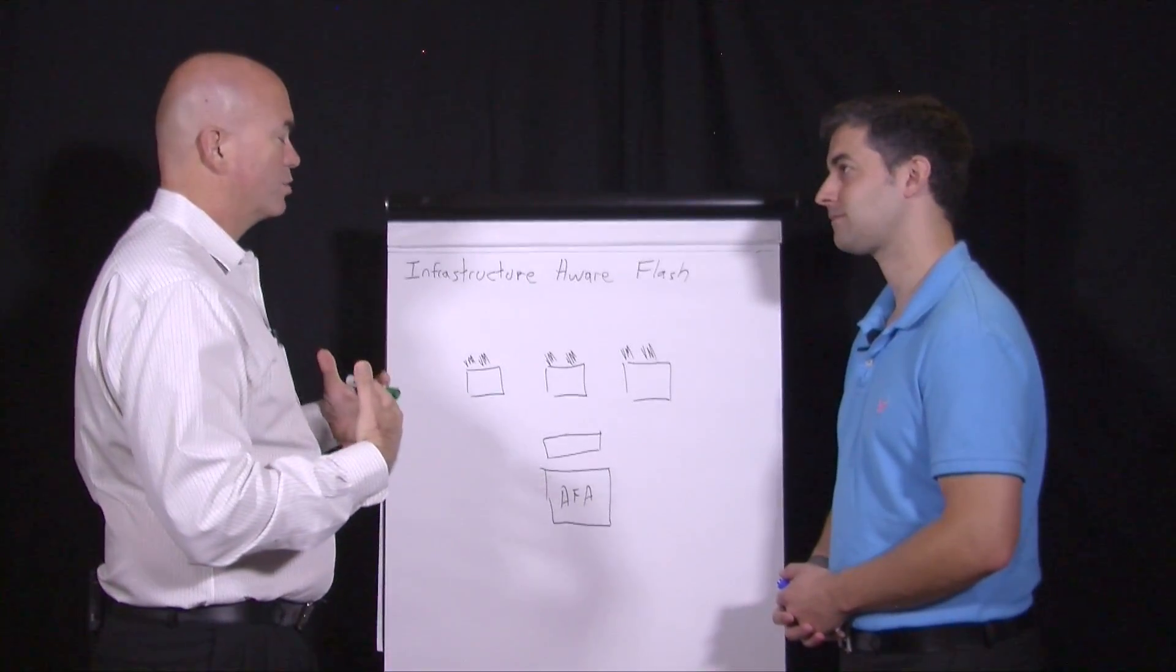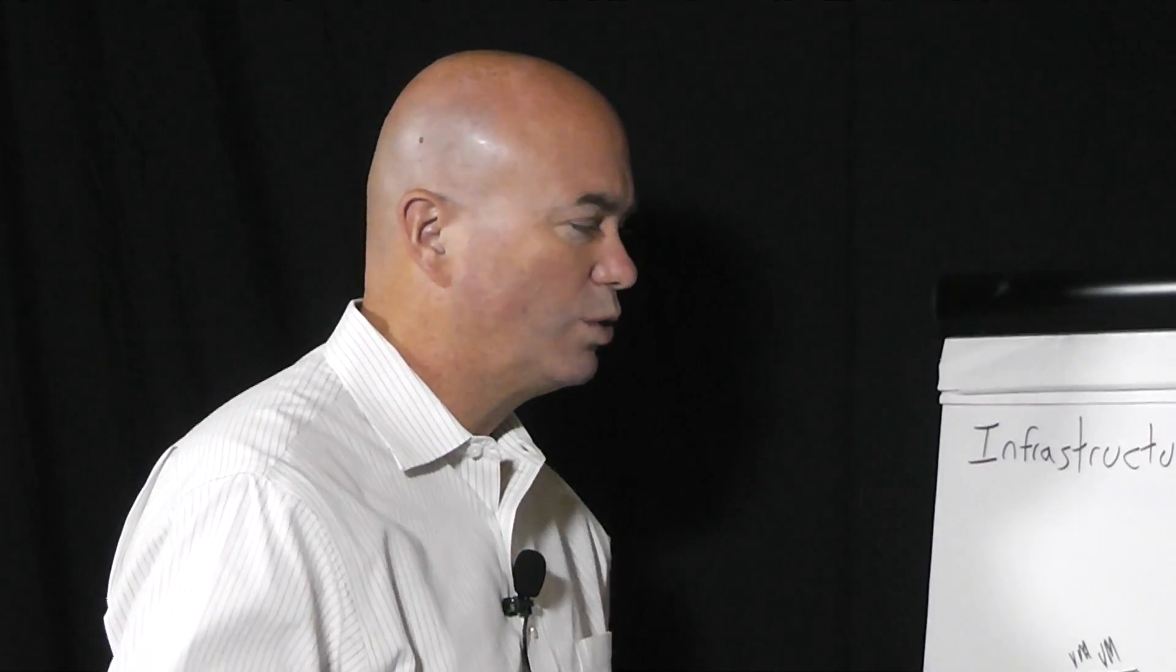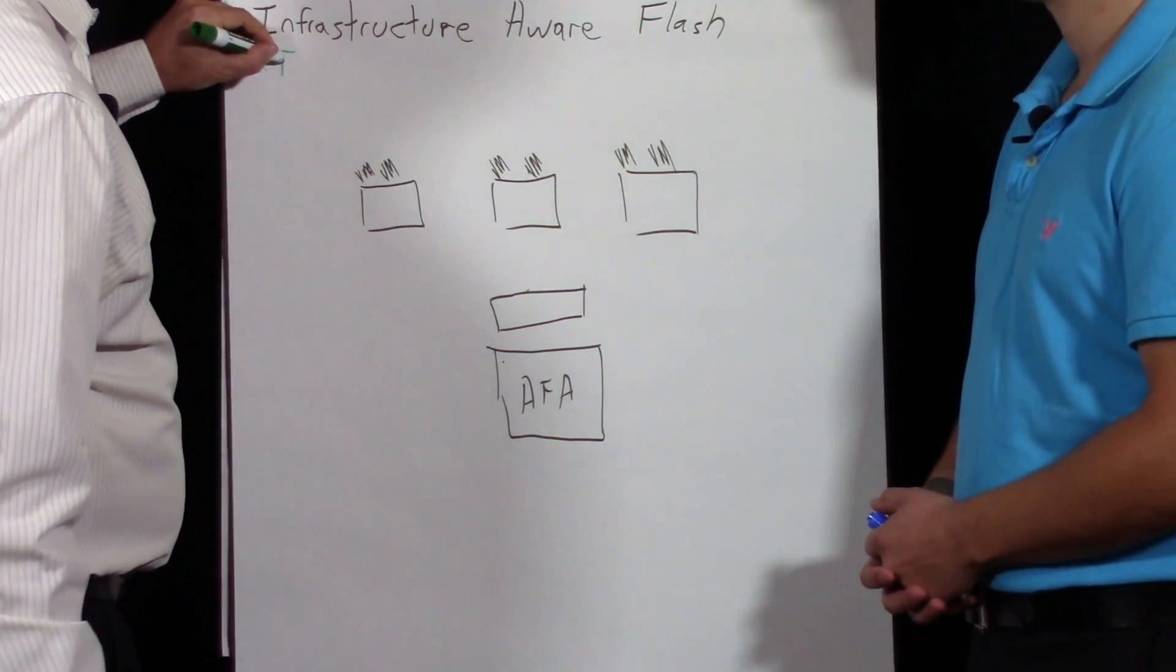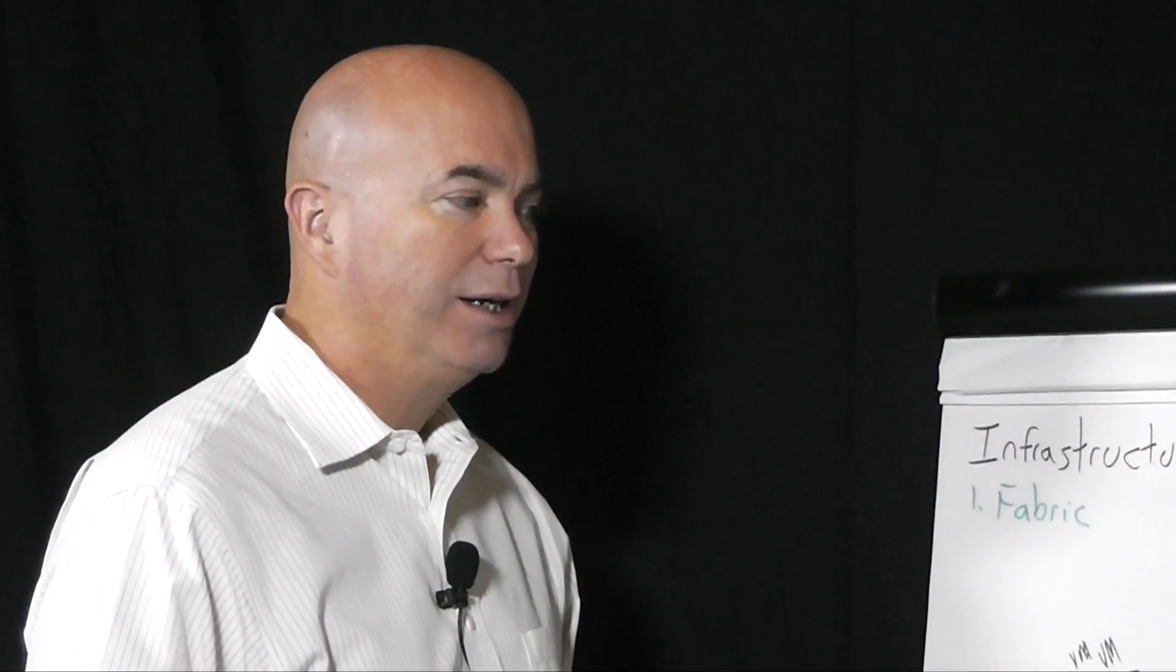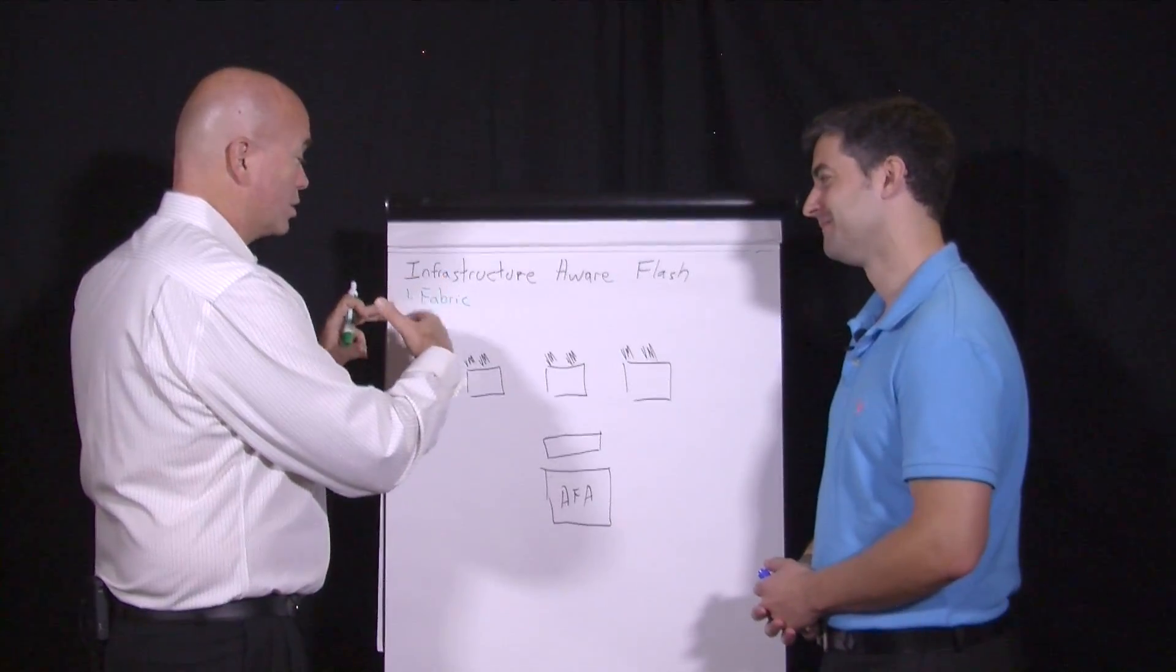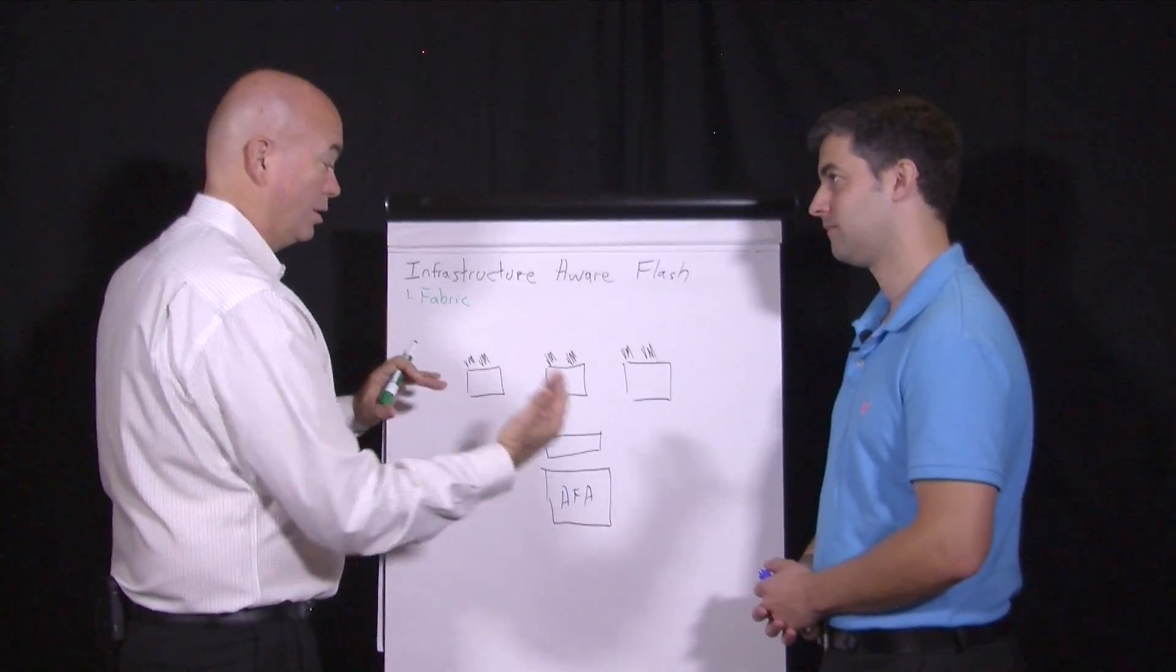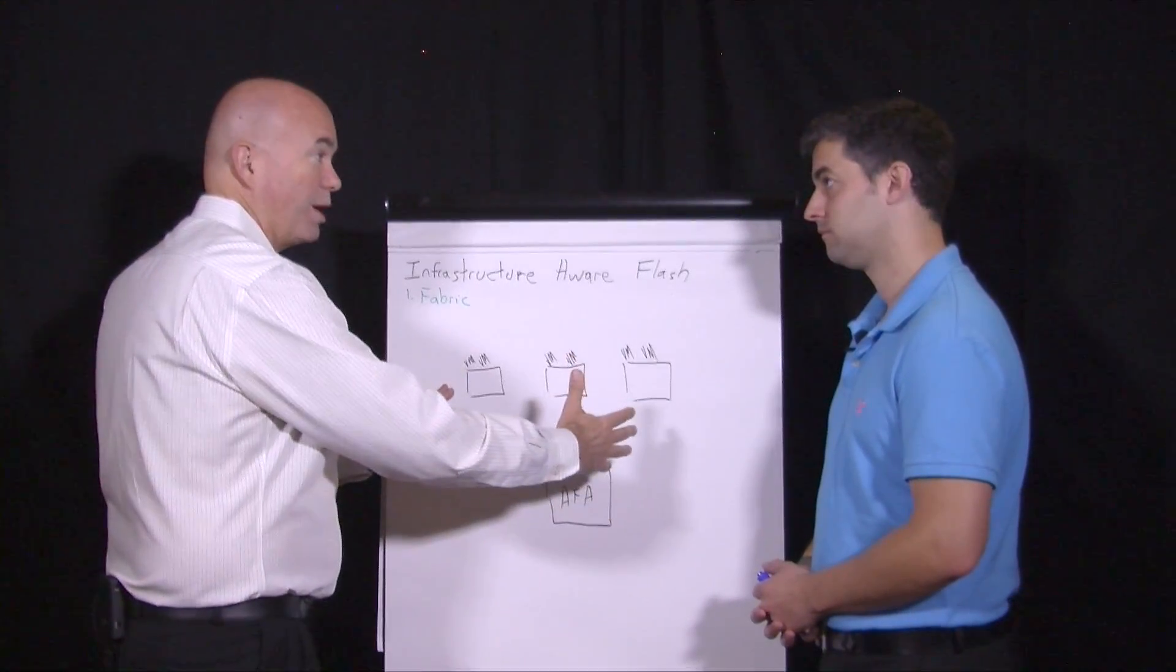As I look at companies that make that leap into an all-flash array, they tend to struggle with three things. One is the fabric or the network that surrounds and connects that all-flash array. It becomes suddenly really critical because now we don't have spinning hard drives, so the latency is very low. What all-flash arrays do is expose problems in the environment.